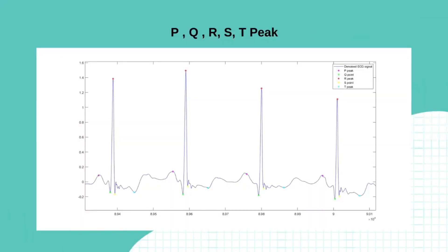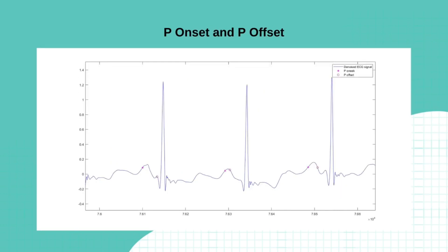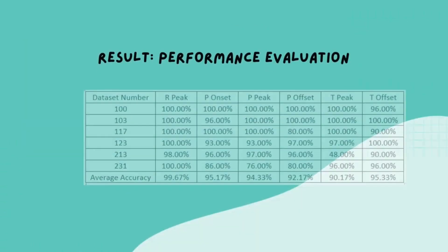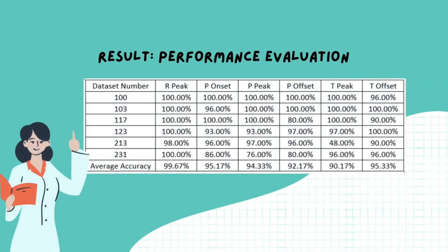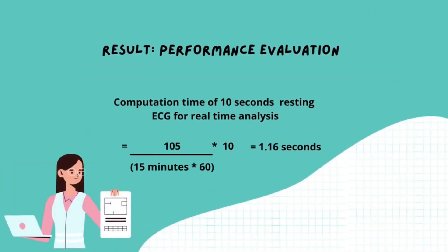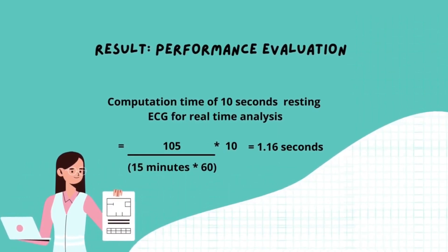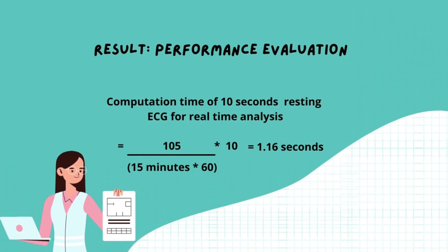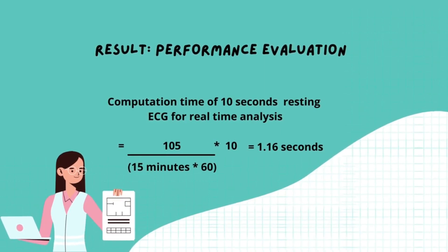The system identifies ECG wave features including P, P-key, R, S, T, P-onset, P-offset, T-onset, and T-offset. For the result of performance evaluation, the system achieves average accuracy above 90 percent. The computation time for a 10-second resting ECG for real-time analysis equals 105 times 10 divided by 15 minutes times 60, equaling 1.16 seconds.